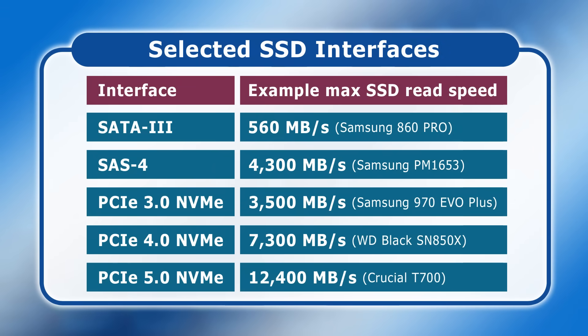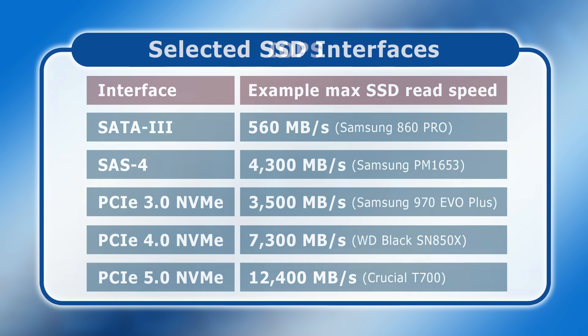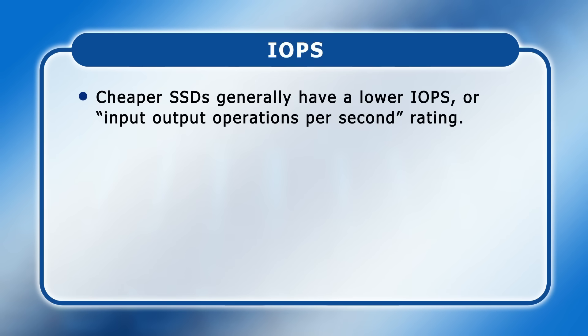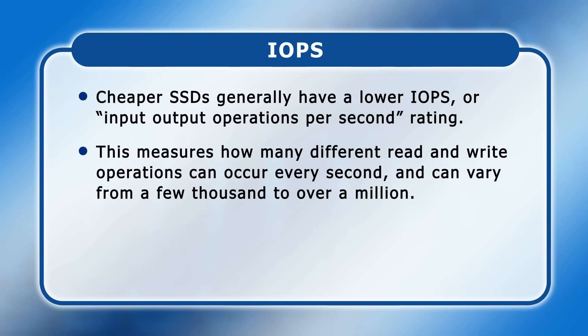The speed at which an SSD can read and write data depends on many factors. One of these is its interface, with drives using the most recent PCIe NVMe connections having the opportunity to transfer data considerably faster than SSDs which utilize SATA or SAS. Cheaper SSDs generally have a lower IOPS, or input-output operations per second rating. This measures how many different read and write operations can occur every second, and can vary from a few thousand to over a million.